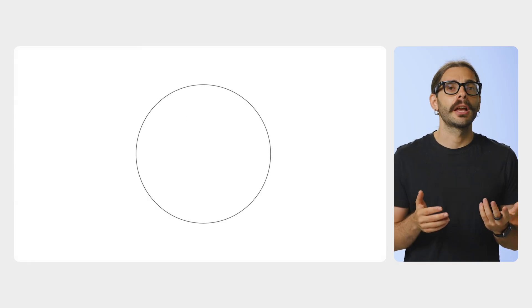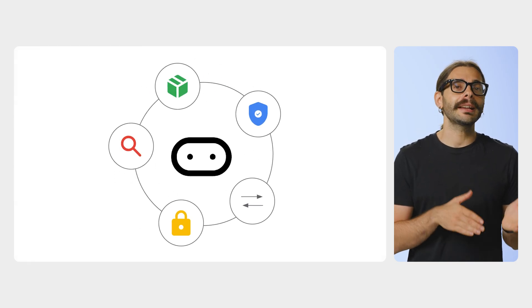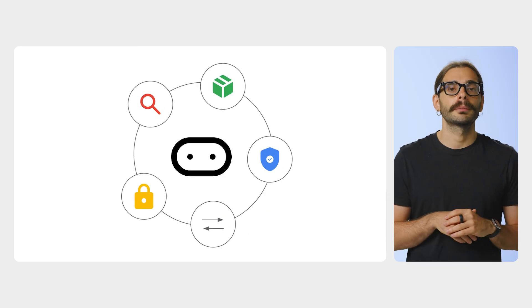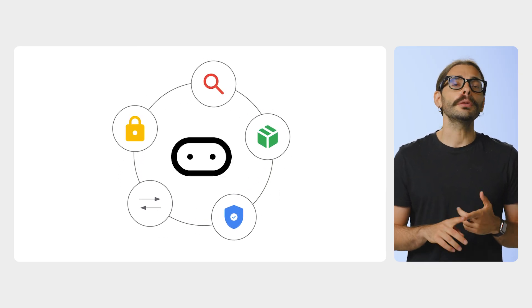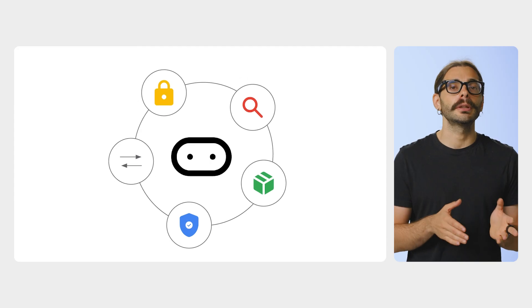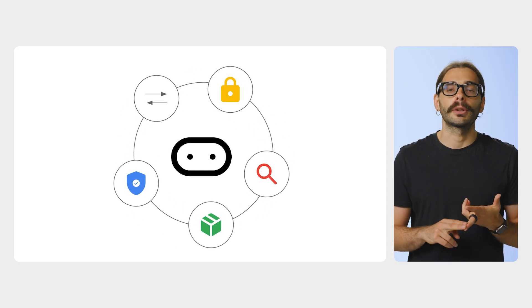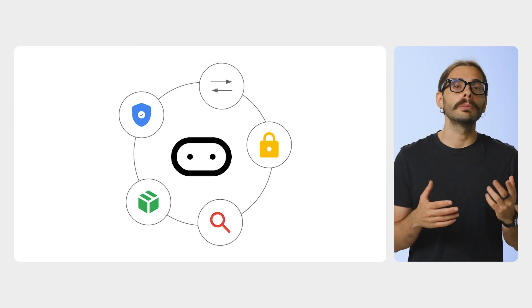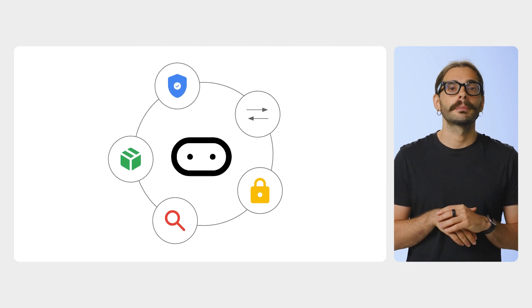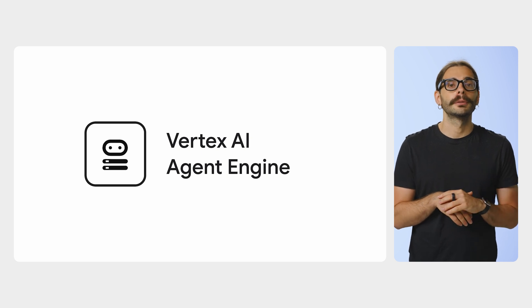Building an agent with a framework like LangGraph or ADK is one thing, but production is a different beast. First, you need to think about containerization, security, things like network, authentication, authorization, and how to monitor and debug your agent's behavior. That's the production gap, and Vertex AI Agent Engine is built to bridge that gap for you.